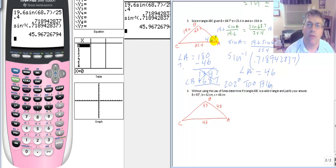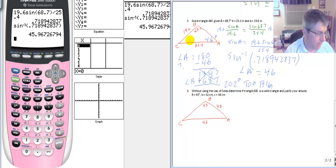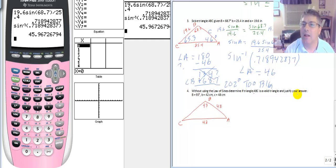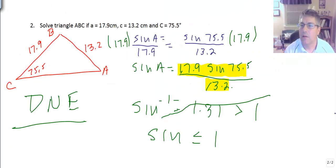Now we can go ahead and solve the rest of the triangle. Angle C turns out to be 65.3 degrees, and then you will use the law of sines to solve for side c. I'll expect you to bring that to class.